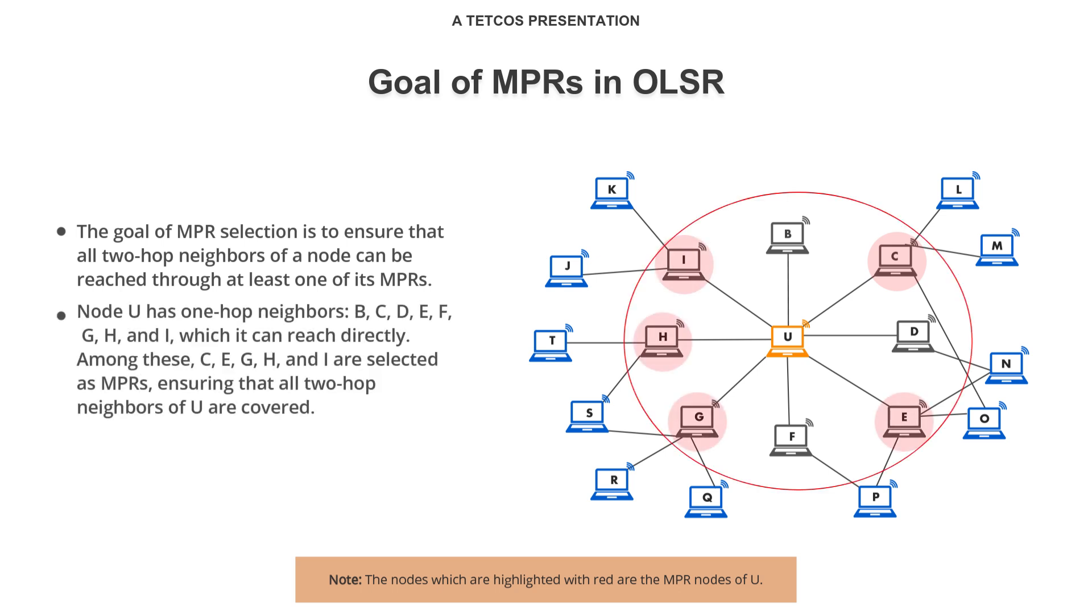Node U has one-hop neighbors B, C, D, E, F, G, H, and I, which it can reach directly. Among these, C, E, G, H, and I are selected as MPRs, ensuring that all two-hop neighbors of U are covered.